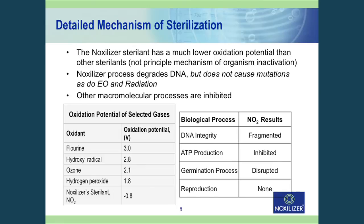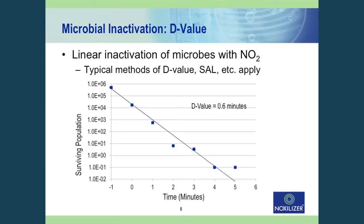With every sterilization process, you have to show the inactivation curve or D-value curve. For conditions of 5 milligrams per liter NO2 concentration in the chamber, we had a D-value of about 0.6 minutes and a linear 6-log reduction of the spore population over the full exposure time shown.